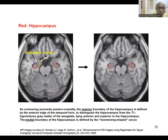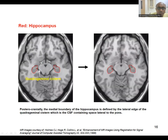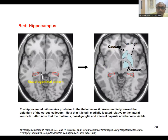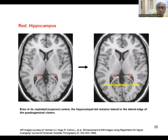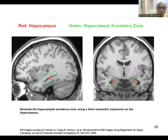Remember: the amygdala and uncus lie anterior to the temporal horn — that is the superomedial part and should not be contoured. This is part of the basal ganglia area; no need to worry about it. Contour from the lower part of the temporal horn, posteromedially, up to the lower part of the quadrigeminal cistern. When viewed on axial, coronal, and sagittal slices, the hippocampus looks like a banana shape.